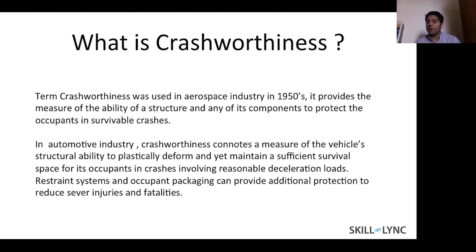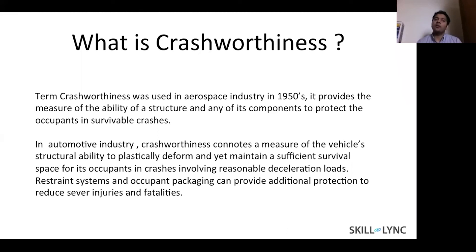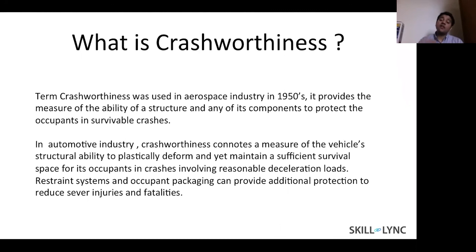It's not possible to guarantee protection in all scenarios — for example, if you fall off a hill, unfortunately you might not survive. But engineers look at data on how accidents commonly occur and identify the most frequently occurring crash types. Based on that, they engineer the product to handle those scenarios. This entire process of engineering for safety is called crash worthiness, and it can be done through physical experiments or computer simulation.